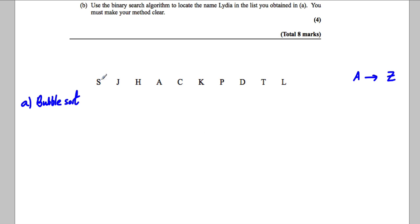So what's first in the alphabet out of these two? Well J, so I'm going to move that and put J there. What's first out of these two? Well H, so H goes there. What's first out of A and S? Well A, so A goes there. S and C? Well it would be C. S and K? Well it would be K. S and P?